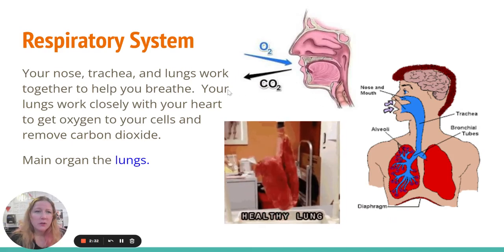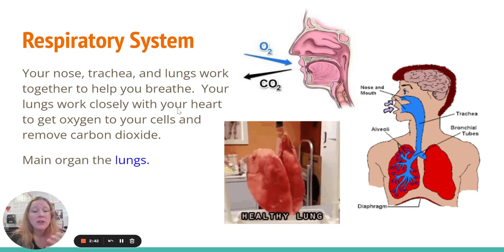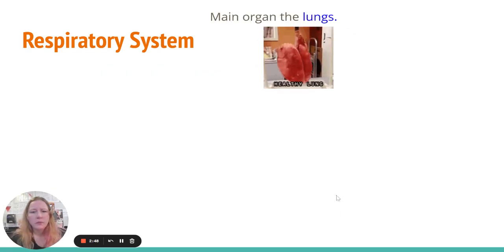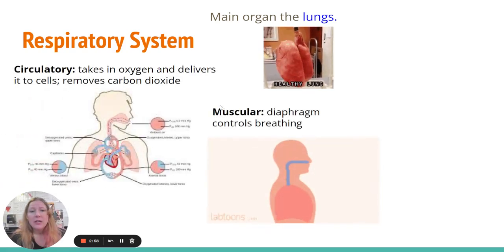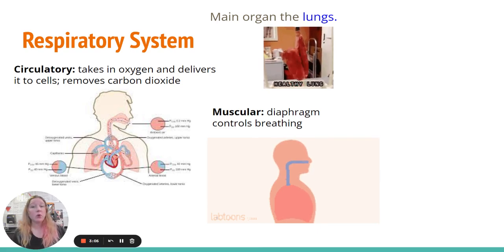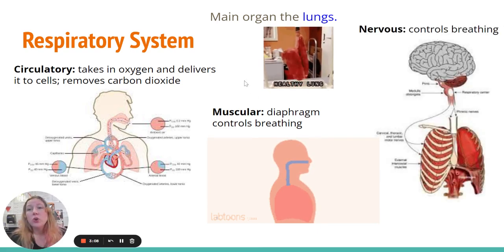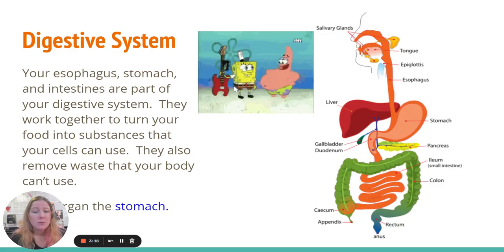The respiratory system: you breathe in oxygen through your nose and breathe out CO2. We already know it works with the circulatory system, but its job is to get oxygen into your lungs to keep your body functioning. The main organ of your respiratory system is your lungs. If you're in choir or band, you might strengthen the diaphragm, which is a muscle that works with the respiratory system. Your nervous system also controls your breathing — you don't have to think about it, it's an automatic function. But you can think about your breathing; your brain can decide which mode you're in.